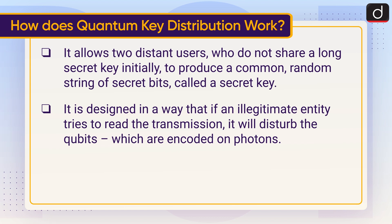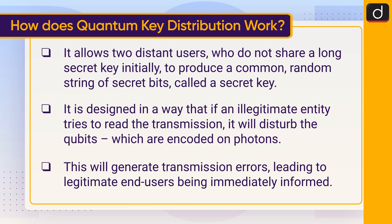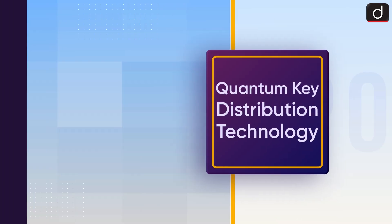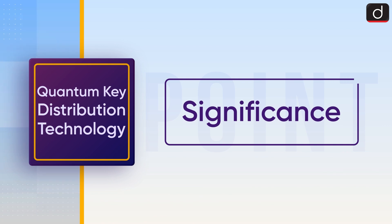QKD is designed so that if an illegitimate entity tries to read the transmission, it will disturb the qubits, which are encoded on photons. This will generate transmission errors, leading to legitimate end users being immediately informed.